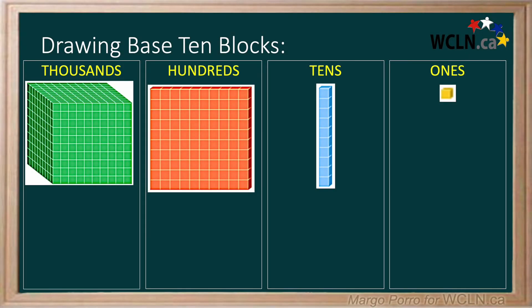What about drawing a representation of the number? First, we need to learn to draw each type of block. On a scrap piece of paper or in a math notebook, be ready to try each drawing. Drawing 1s is easy — you can draw a dot or a small square. Try both.